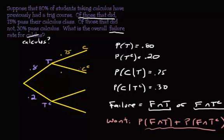So that means not passing calc, what was it, 0.25. Passing calc, given you didn't take trig, that was 0.3, so not passing 0.7.